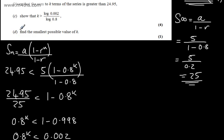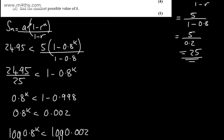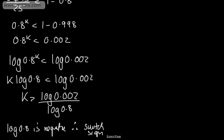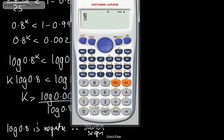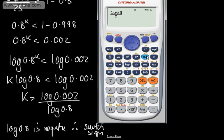In part d, find the smallest possible value of k. Using the calculator, what we want is log of 0.002, and then we're going to have log of 0.8. We can say from here that k has got to be greater than 27.85.